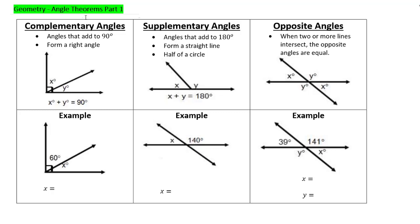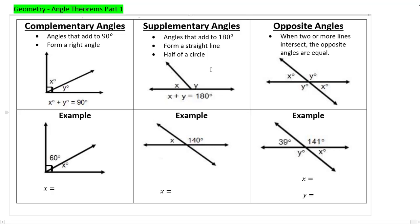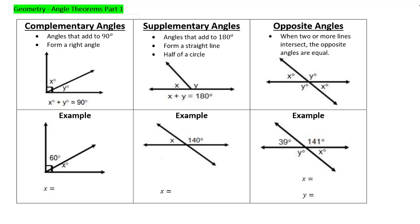These are called angle theorems. In mathematics, a theorem is a rule that's always true. Some rules apply in certain situations but not others. The general idea of a theorem is a rule that is infallible — you can't break it. It's always true.